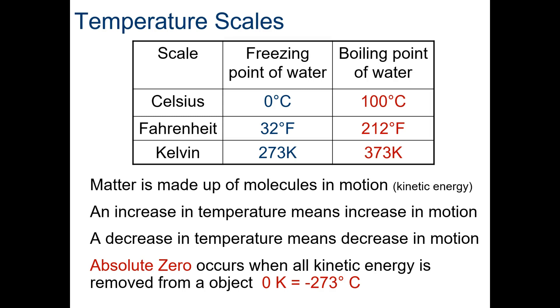Absolute zero, please write this down, occurs when all kinetic energy is removed from an object. So that's zero Kelvin or negative 273 degrees Celsius. When you change that to Fahrenheit, that gives us a better idea. That would be negative 459.67 degrees Fahrenheit. That obviously is very, very cold. At this point, absolute zero, it's theoretically thought that all molecular motion stops. We have never accomplished absolute zero or zero K. It's just been theorized, we've gotten pretty close to it, but we have never actually hit zero K.